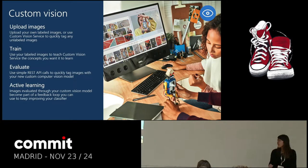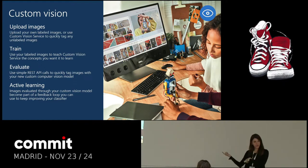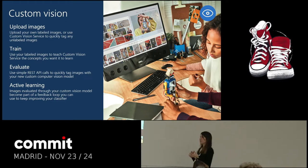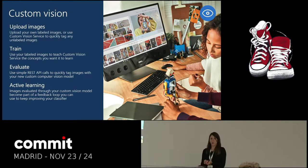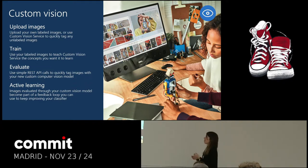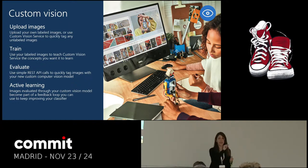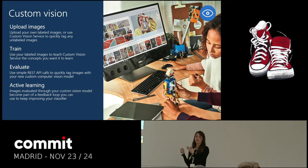Custom Vision is about analyzing images. You might say, we already showed Computer Vision — why would we want this? Computer Vision will give us an analysis detecting common objects. But maybe you work in a very specific industry where you have images of objects that are not very common, and you need a model that will detect those objects. We can use Custom Vision to upload a set of images, tag them, click a train button, and then you have your model. From then on you can use it to detect those objects in images.